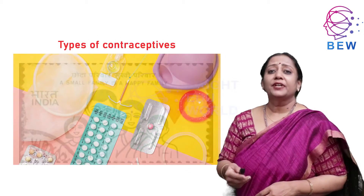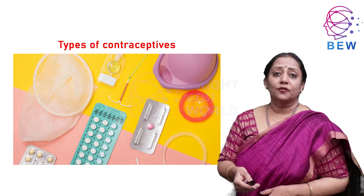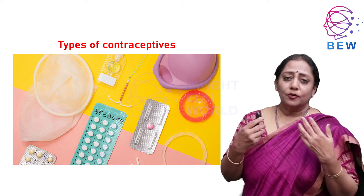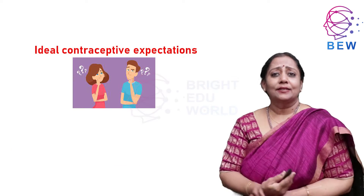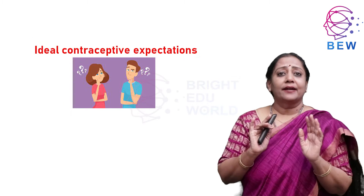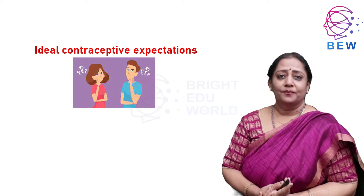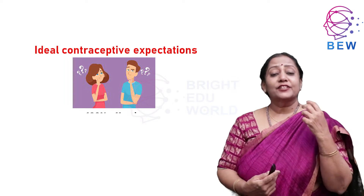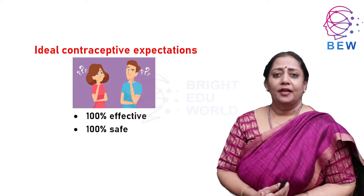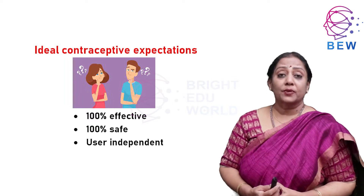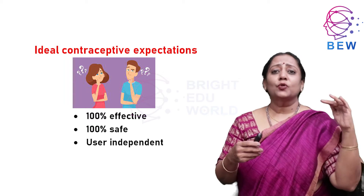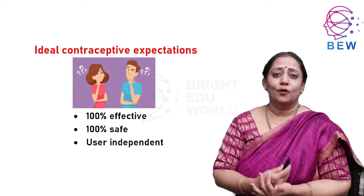Today we will see what are the different types of contraceptive methods available. When a couple thinks of going for contraception, what is the ideal contraceptive? People have their own criteria. They expect it should be 100% effective, it should be 100% safe, and it should be independent of intercourse so there is no compromise on the pleasures derived from the act.